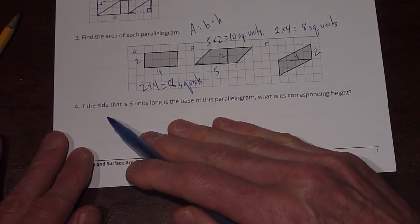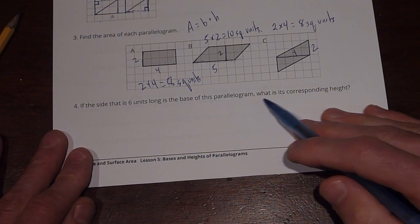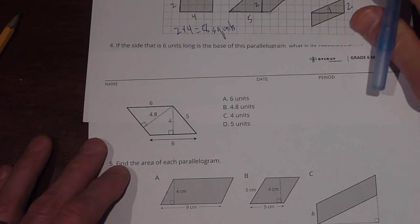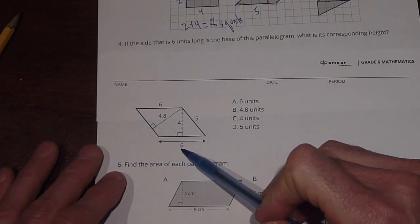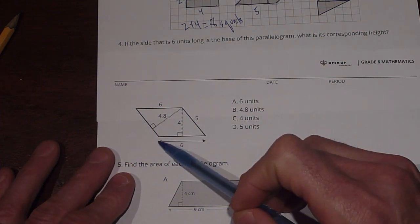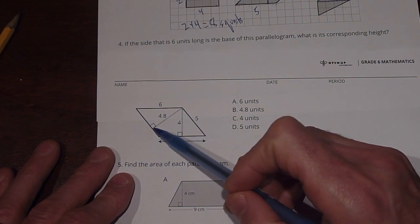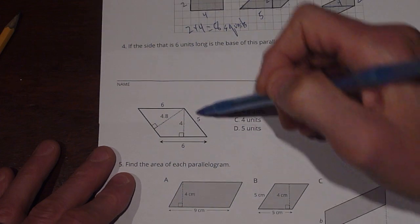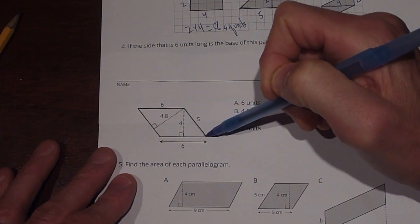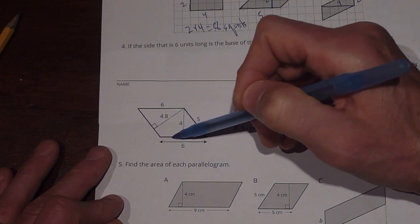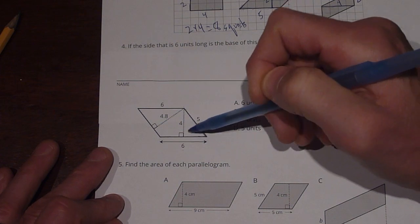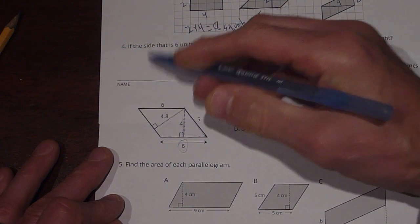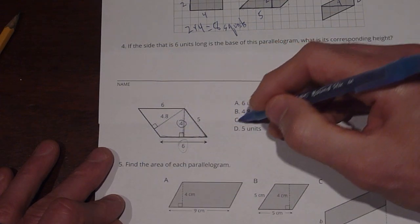Number four: if the side that is six units long is the base, what is its corresponding height? We see the six-unit side, and we have options: one segment is perpendicular to another side at 4.8 units, one is perpendicular at four units, and one side is five units. The height must be perpendicular directly to the six-unit base, so four units is the corresponding height — answer C.